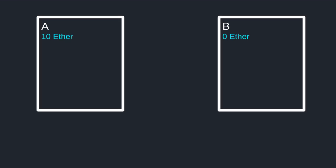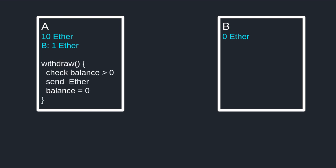So how can this be exploited? Let's say that contract A has 10 ethers and contract B has zero ethers. Inside contract A, it keeps a record of how much ether it owes to other contracts and addresses, and here contract A holds one ether from contract B. It has a function called withdrawal — if you have some ether stored in this contract, you are able to withdraw it. It will first check that you have enough balance, then send back all the ether you've stored, and then after sending the ether, it sets your balance to zero.